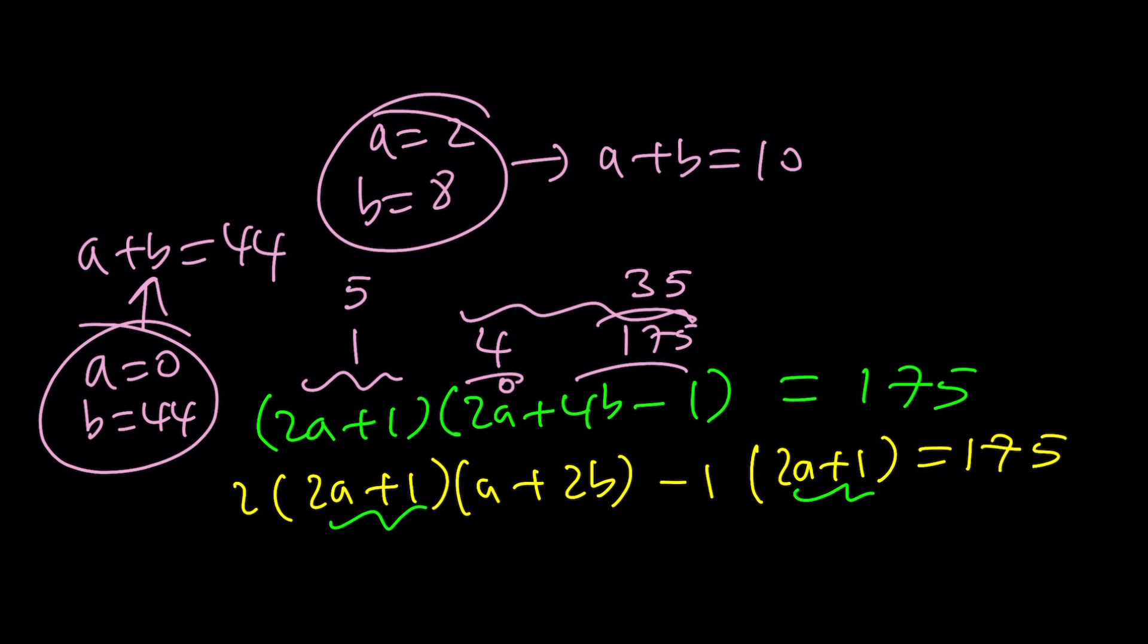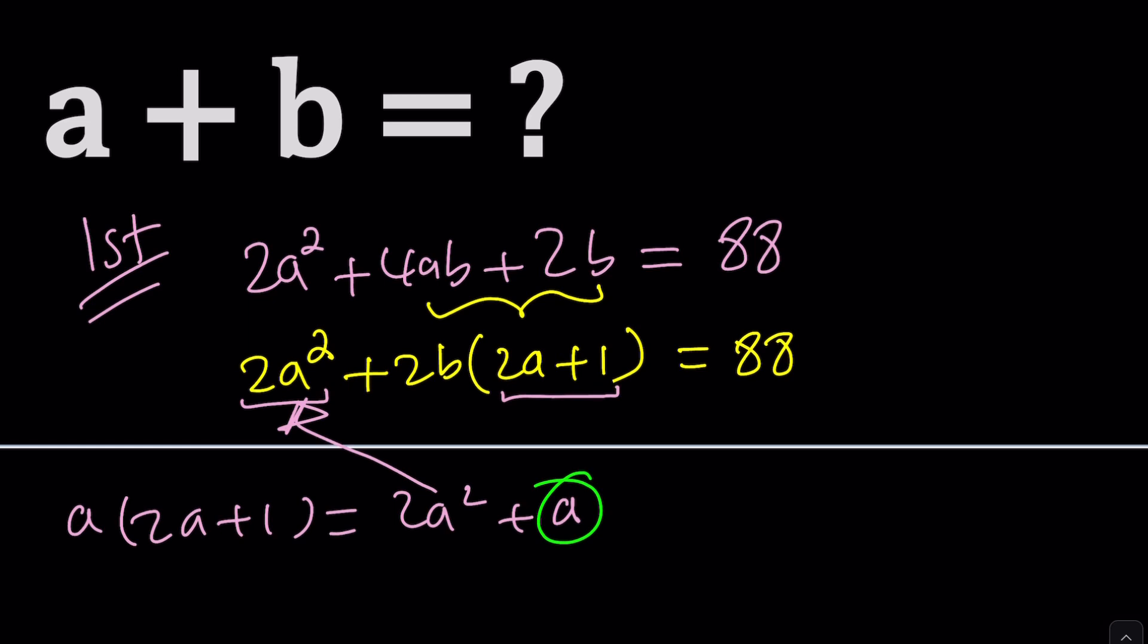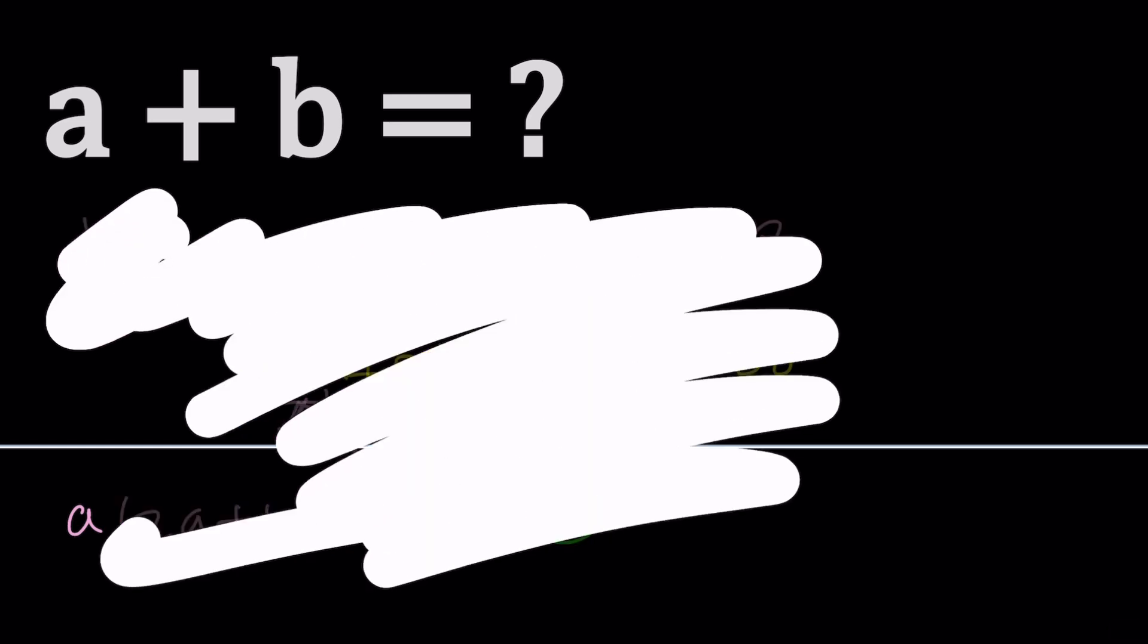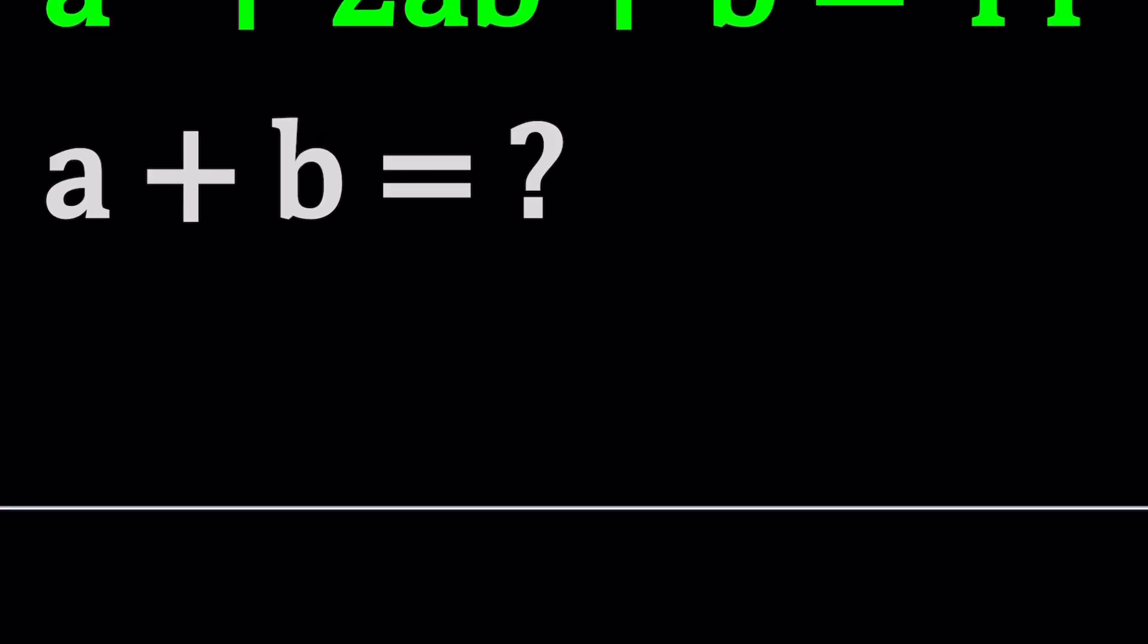You see, once you find the values of a and b, you can easily find a + b. That's fairly easy to do. And are there any other solutions? I'm going to leave it as an exercise, because I need to go back and do the second method with the limited space that I have. Sorry about that. I totally forgot.